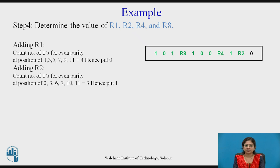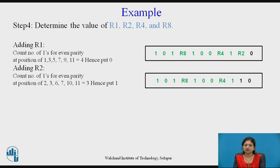For r2, count the number of 1s at positions 2, 3, 6, 7, 10, and 11. The total number of 1s at these positions is 3, which is odd, so r2 equals 1. The Hamming frame so far is: 0, 1, 1, r4, 0, 0, 1, r8, 1, 0, 1.